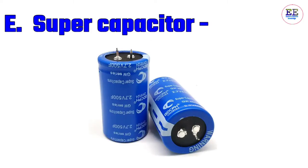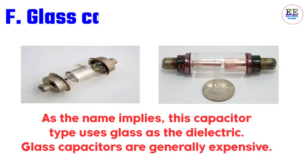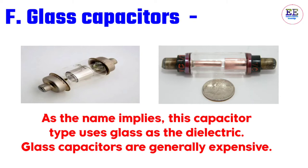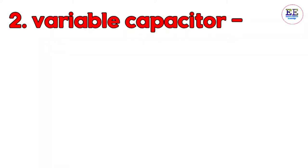F) Glass capacitors: as the name implies, this capacitor type uses glass as the dielectric. Glass capacitors are generally expensive. Number two — variable capacitors: variable capacitors are mainly divided into two types: A) trimmer capacitors and B) tuning capacitors.